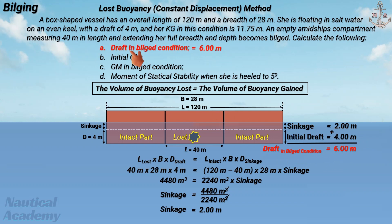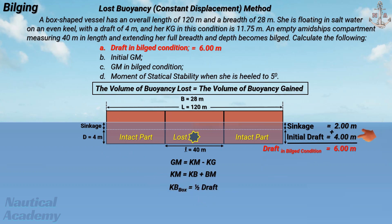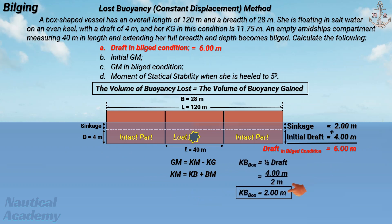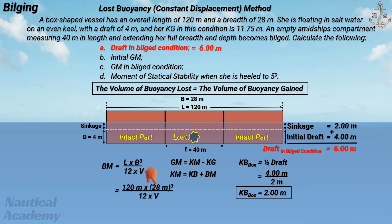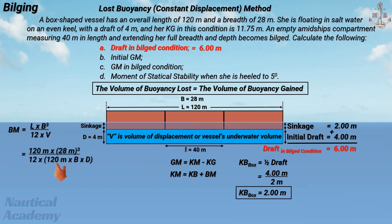Next, let's calculate the initial metacentric height. GM is found using the formula KM minus KG. The value of KG is given; to determine KM, it equals KB plus BM. For a box-shaped vessel, KB is half of the vessel's draft; since her initial draft is 4 meters, KB is 2 meters. BM is calculated using the standard formula where L is the vessel's overall length (120 meters), B is the breadth (28 meters), and V is the volume of displacement — the vessel's underwater volume, which corresponds to 120 meters × 28 meters × 4 meters draft. A separate video will cover the derivation of the BM formula and the origin of the constant 12.